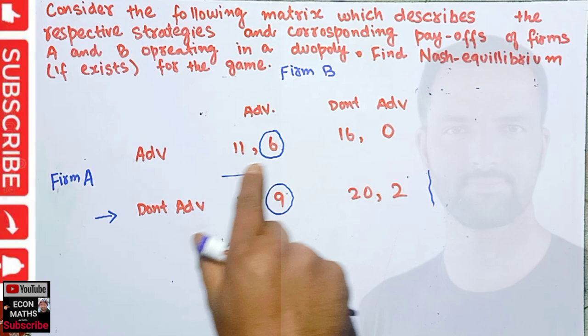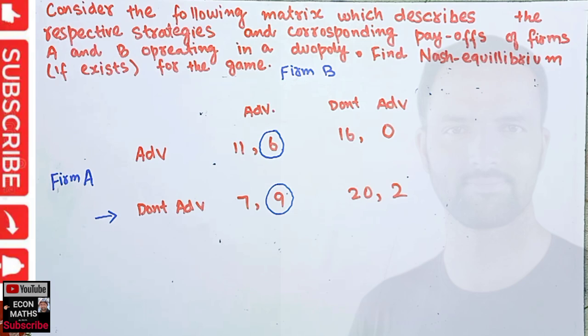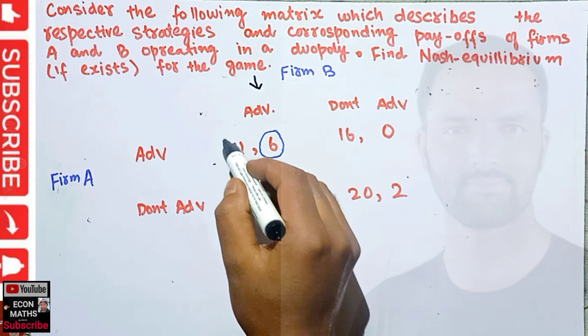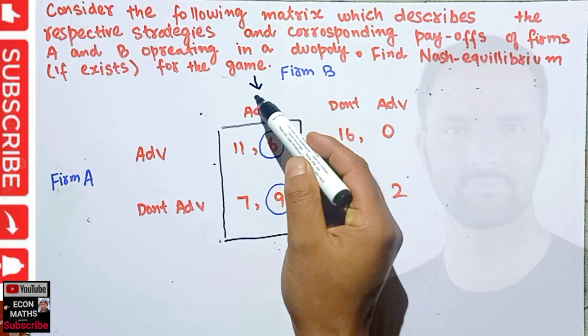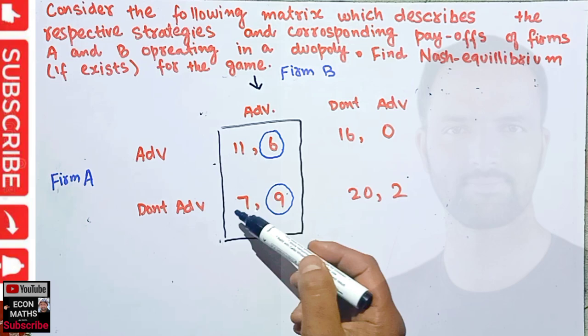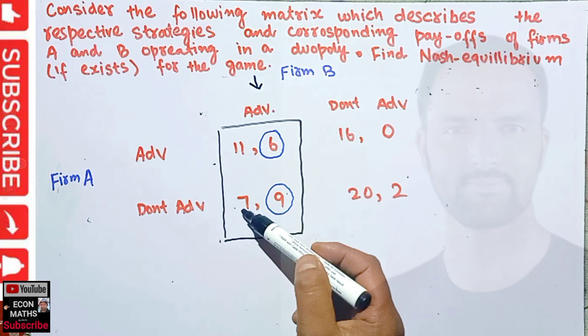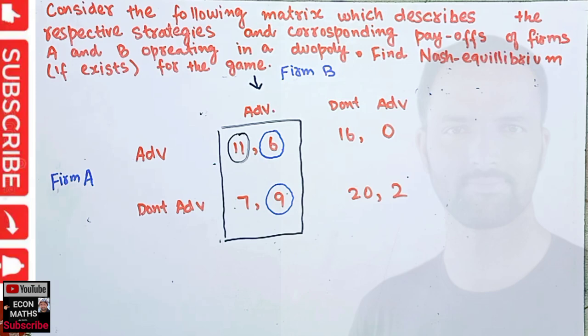Now coming to Firm B's perspective. If Firm B chooses to advertise, Firm A has two options: advertise or not advertise. Advertising gives Firm A a payoff of 11, while not advertising gives a payoff of 7. Since 11 is greater than 7, Firm A will choose to advertise.